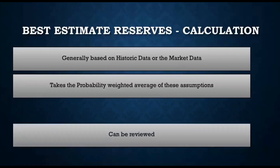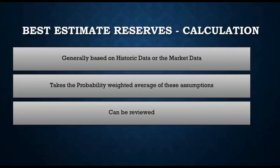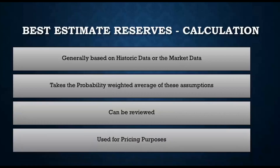Companies calculate the best estimate assumptions using probability weightage accordingly. These assumptions are updated and reviewed from time to time based on how experience changes and how they expect it to impact the future. Depending on the company's philosophy, they can review these assumptions regularly. Best estimate reserves are majorly used for pricing purposes — not for reserving — because if we add margins on top while calculating premiums, the premiums could turn out to be unexpectedly high, accounting for uncertainty that might not even materialize.